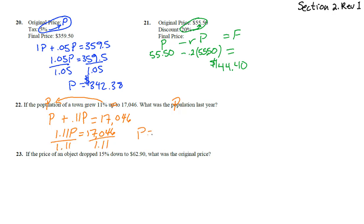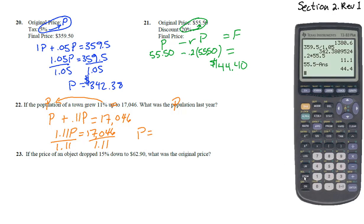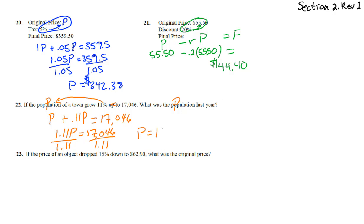And that will give us P equals, pull out the calculator, 17,046 divided by 1.11. And we get 15,356.8 people. So we better round to the nearest person. Like here we did the nearest cent. If it's people, it's the nearest person. So 15,357. And it's people.